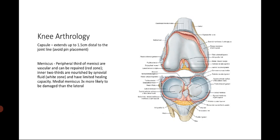For the arthrology of the knee, the capsule extends up to 1.5 centimeters distal to the joint line — when placing pins in the knee, we try to avoid this area as it's very painful. We also have the meniscus, which has zones: the red zone, which is vascular and can be repaired, and the inner two-thirds — the white zone — nourished by synovial fluid with limited healing capacity. The medial meniscus is injured three times more likely than the lateral due to its more oblique structure compared to the more circular lateral meniscus.